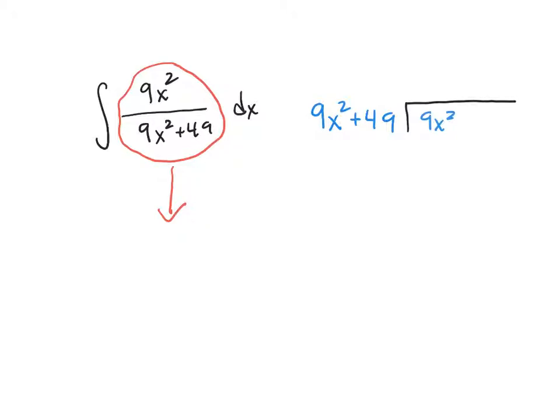Then we basically ask ourselves, how many times does this 9x squared go into this 9x squared? In other words, I'm going to do 9x squared divided by 9x squared, which is 1. So when you divide these, you get a 1, and then you have to multiply this through like the algorithm.